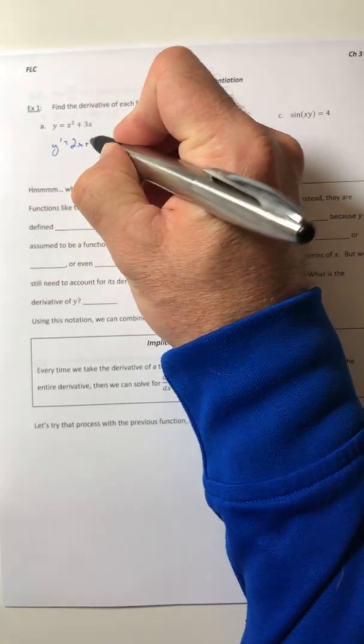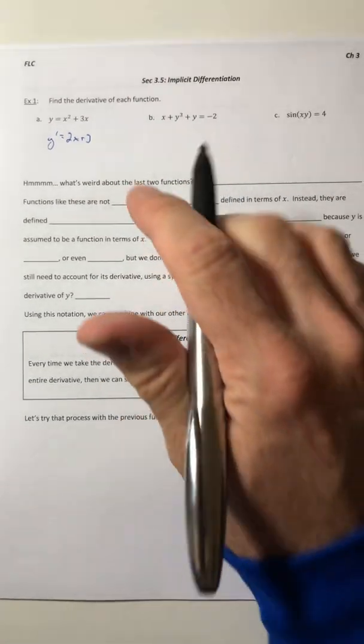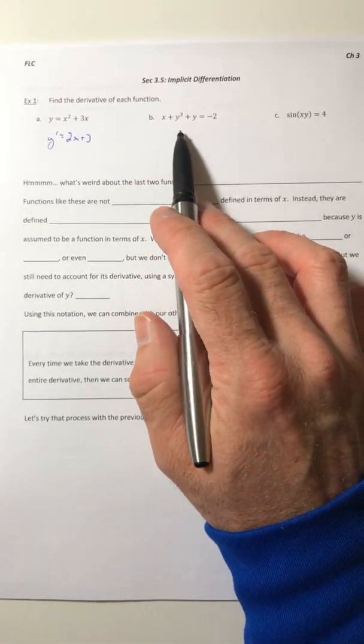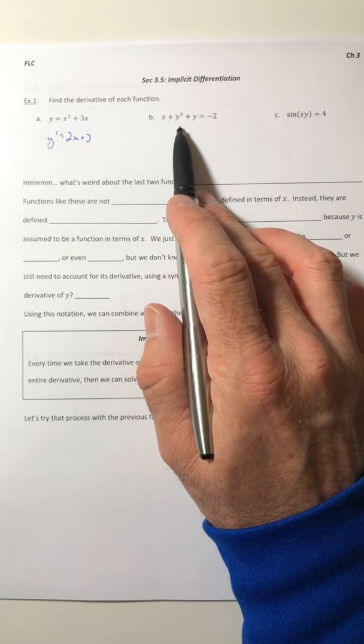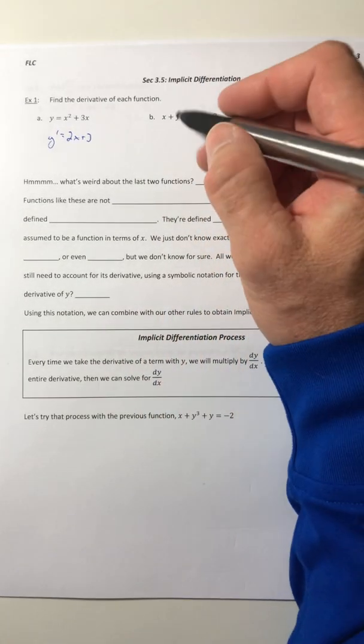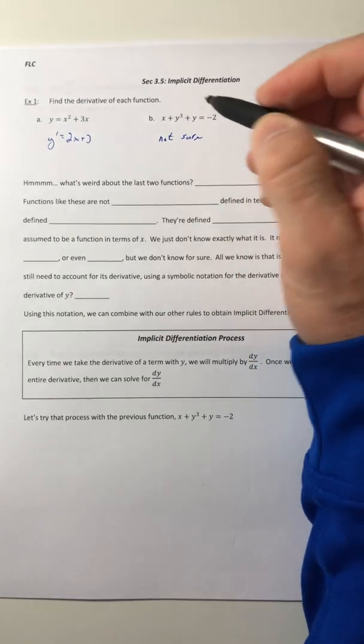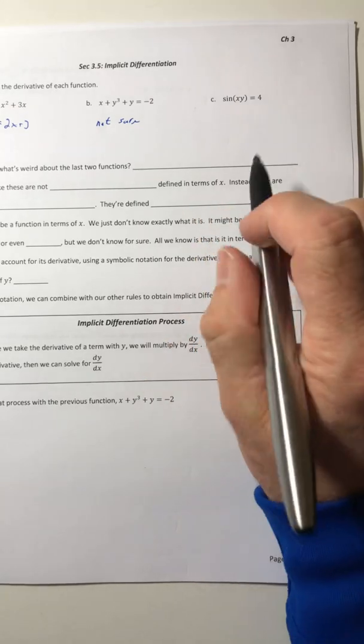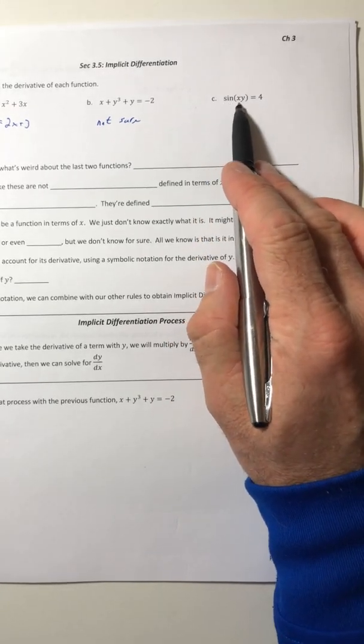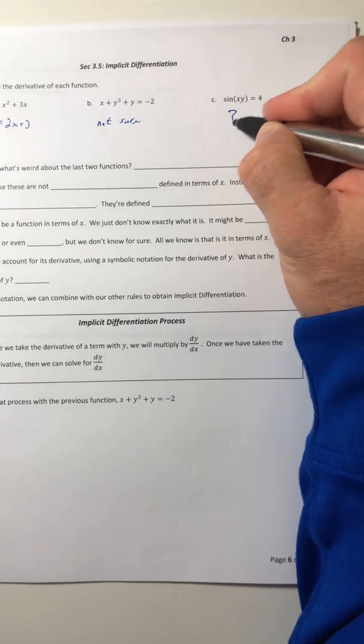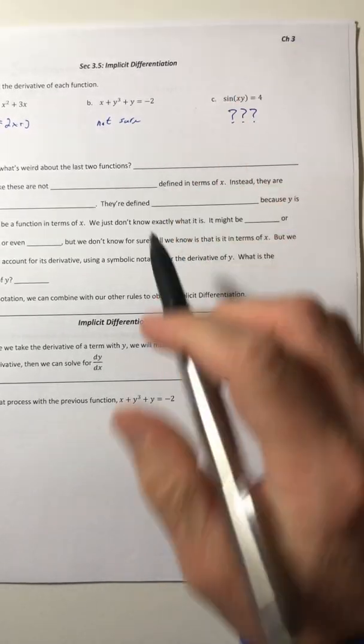Part B, x plus y to the third plus y equals negative 2. Hmm, well, this is a little weird. I'm not sure about that one. And then this one, part C, sine of xy equals 4. That I'm not sure about either.